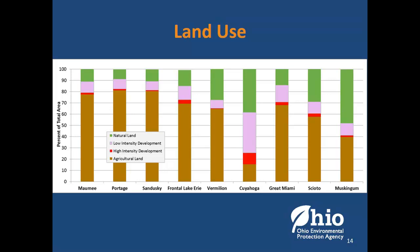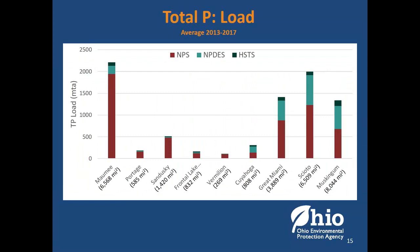While we can't differentiate where the non-point source is coming from, we do understand there are very different land uses in the watersheds. The first six are Lake Erie draining watersheds, going west to east from Maumee to Cuyahoga, and the last three drain to the Ohio River from Great Miami to Muskingum. In western Lake Erie, all three major watersheds are basically at 80% agricultural land use. The Cuyahoga is 50% developed — high intensity and low intensity. The Muskingum is interesting because it's about 50% natural land — mostly forested.